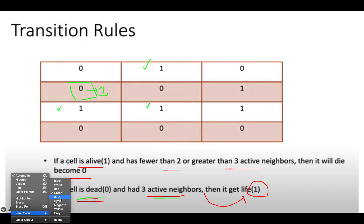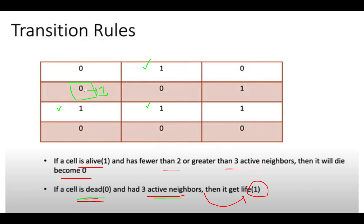When I say intermediary states, it means that instead of updating the cell from zero to one directly, we can update it to three first. Three means it's going to get live. And then once we are done with the processing of the entire grid, we can simply replace this three by one.